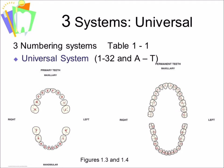The first numbering system we'll talk about is the Universal System, the most common system of numbering teeth in the US. We start upper right and work our way to upper left, then move to lower left and lower right. There are 32 teeth, numbered 1 through 32. For the deciduous teeth, it's capital A through capital T.